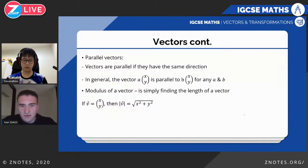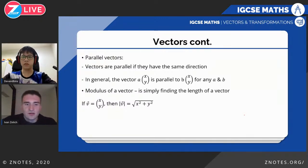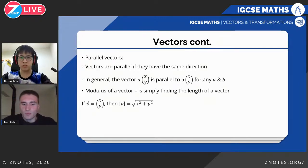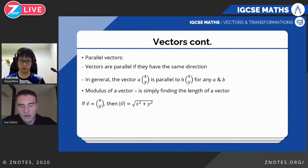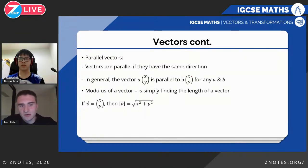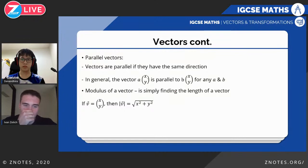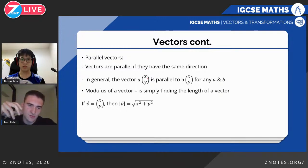Parallel vectors: vectors are parallel if they're in the same direction. In some sense this is a gradient question — if the ratio Y/X is the same for two vectors, they're in the same direction. In general, A times (X, Y) is parallel to B times (X, Y) for any scalars A and B, because the ratio of components is the same. The modulus of a vector is simply its length. Since it's horizontal and vertical, it's just Pythagoras: the square root of the sum of the squares of the components.